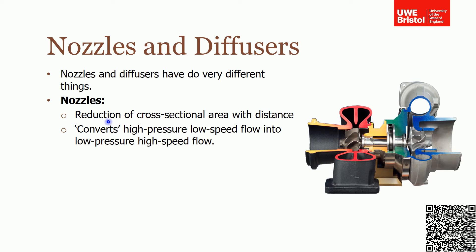So what does this have to do with nozzles and diffusers? A nozzle is essentially a reduction of cross-sectional area with distance, and the effect of this is to convert high-pressure, low-speed flow into low-pressure, high-speed flow. On the turbocharger's turbine side, you can see there is a nozzle — as the cross-sectional area reduces, the flow increases in velocity, imparts momentum on the turbine blades, and exits.